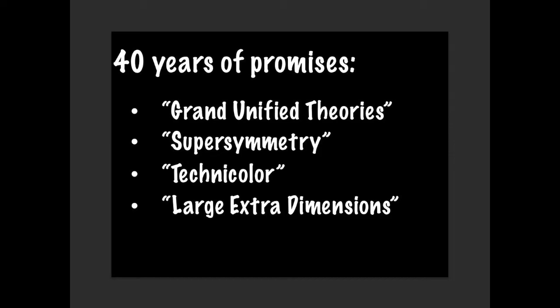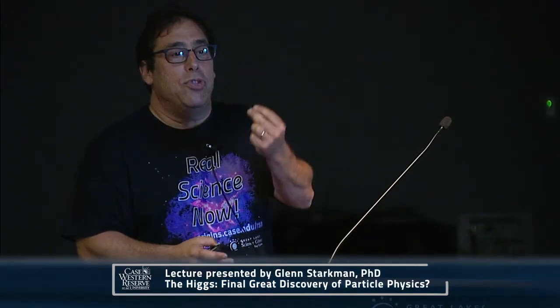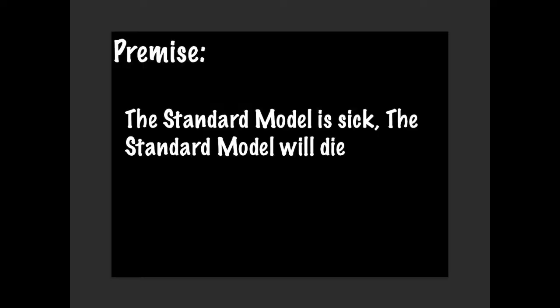And over 40 years, we've really expected there to be more. And those theories beyond the standard model go by names like grand unified theories, or supersymmetry, or technicolor, or large extra dimensions. Grand unified theory says that all those different forces are different aspects of the same force. Supersymmetry says that for every particle we know, there's another particle that we haven't discovered called its superpartner. Technicolor is a way of trying to not have a Higgs boson there, but to instead have particles get masses from new things called techniquarks. And large extra dimensions is a way of trying to explain why gravity is incredibly weak.